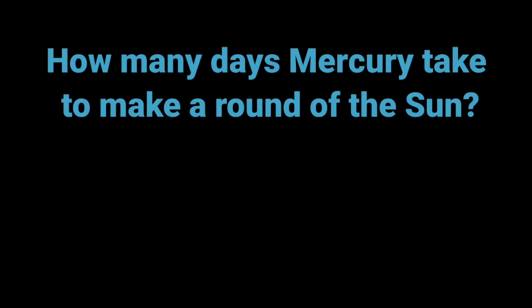How many days Mercury take to make a round of the sun? Eighty-eight days.